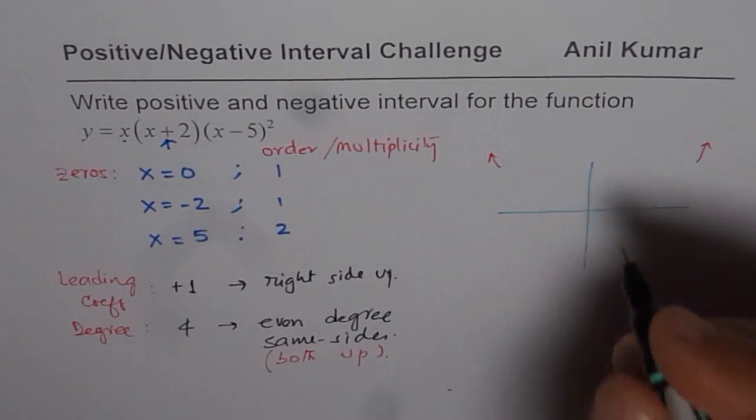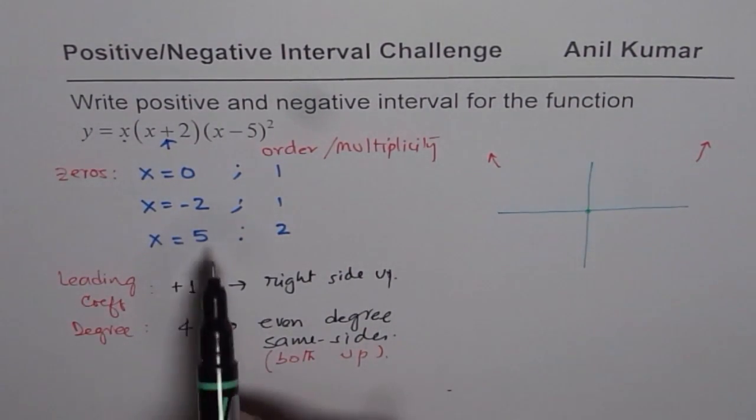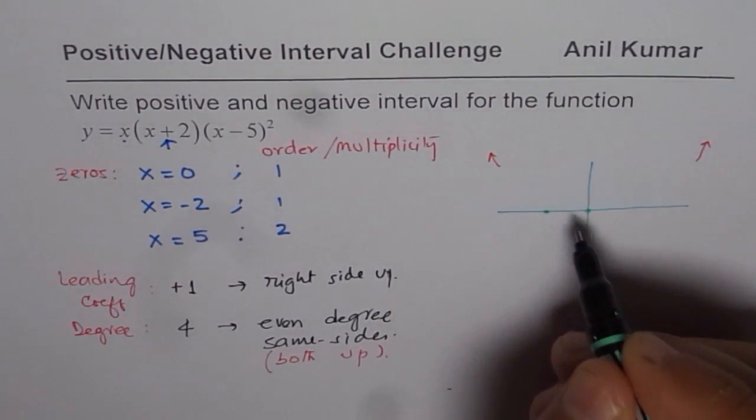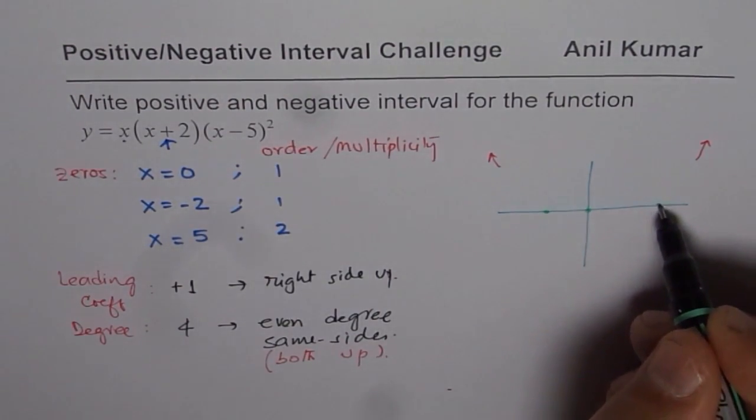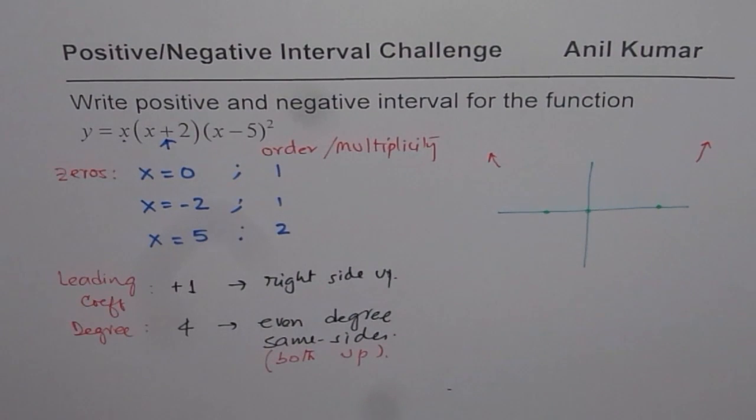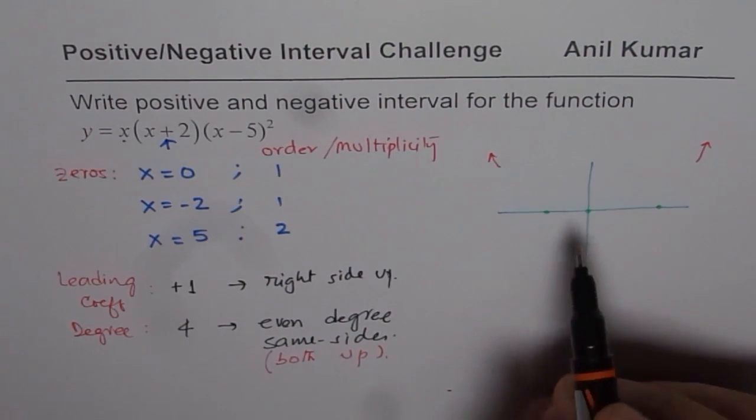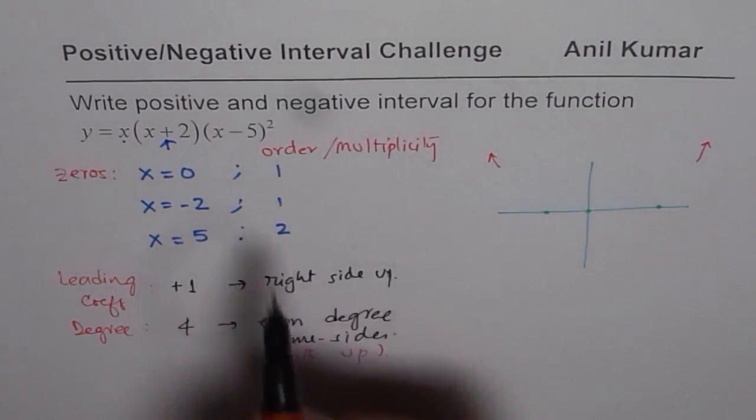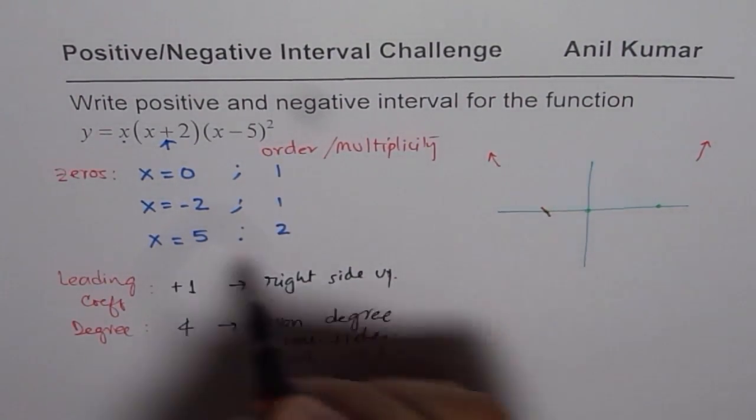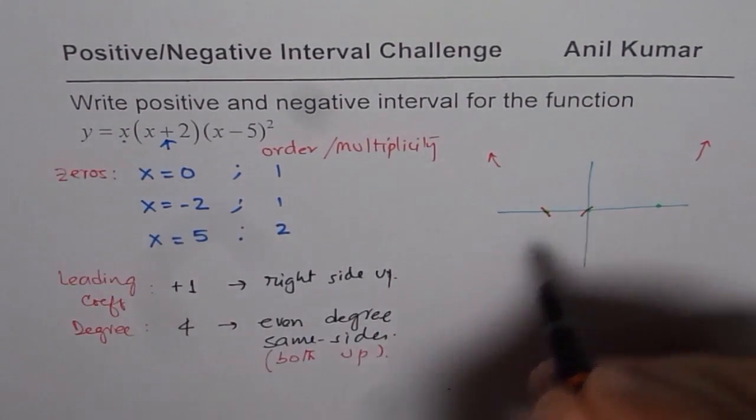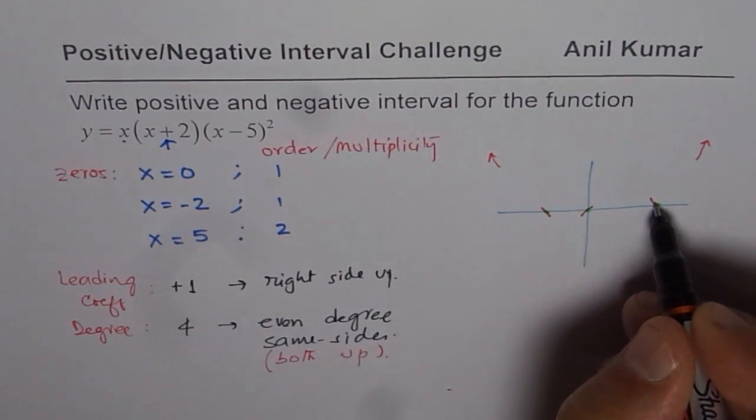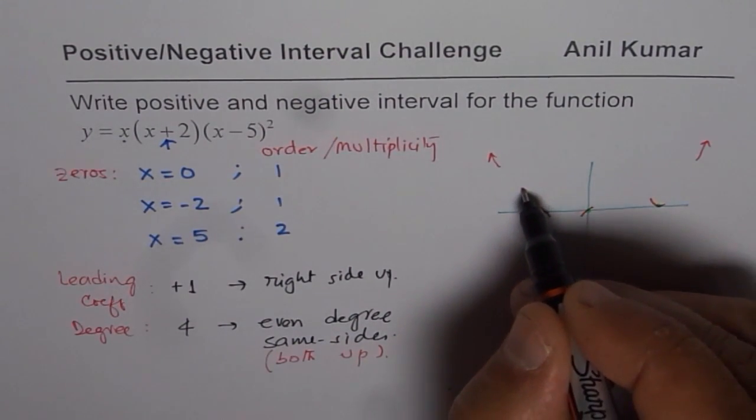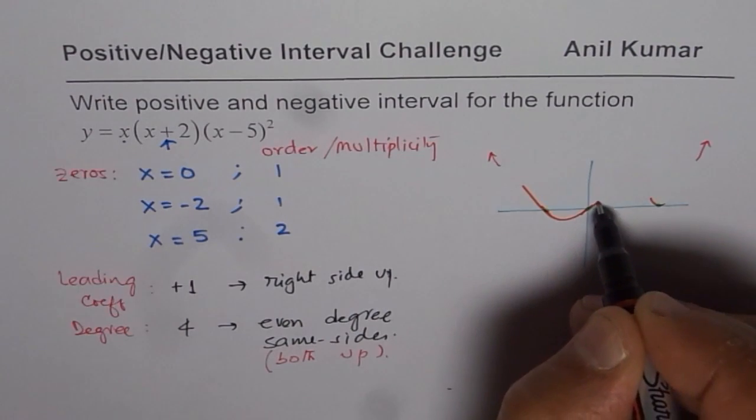So first zero, we have a zero at zero. Let's put this zero. Then we have it at minus 2 and this is minus 2 and here we have it 5. Now connecting the dots, we can actually sketch the function. So this zero at minus 2 is linear. So it is going to cross. This zero is also linear. It is going to cross. 5 is quadratic. It is going to end up like this. So basically what you get is a graph which is kind of like this.